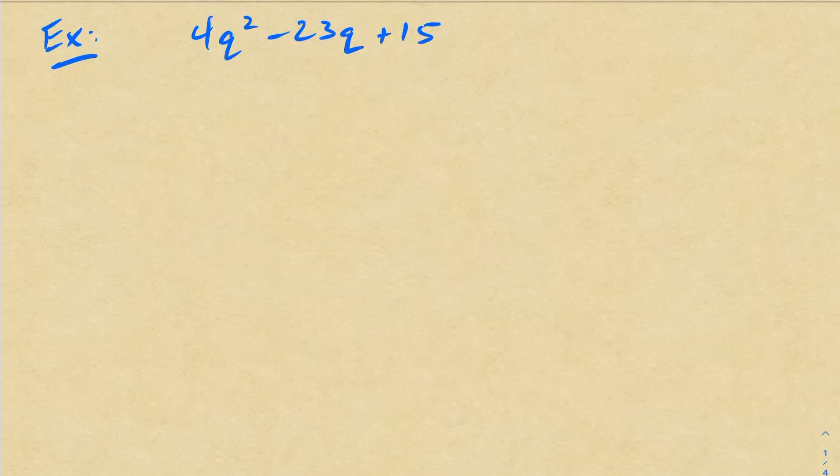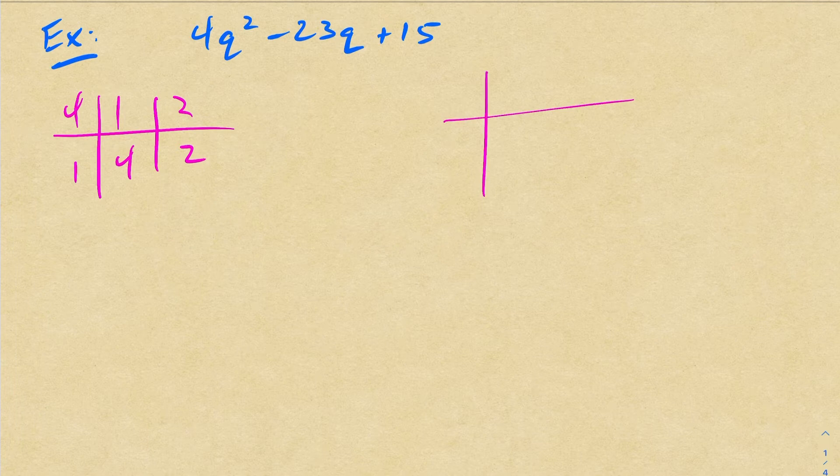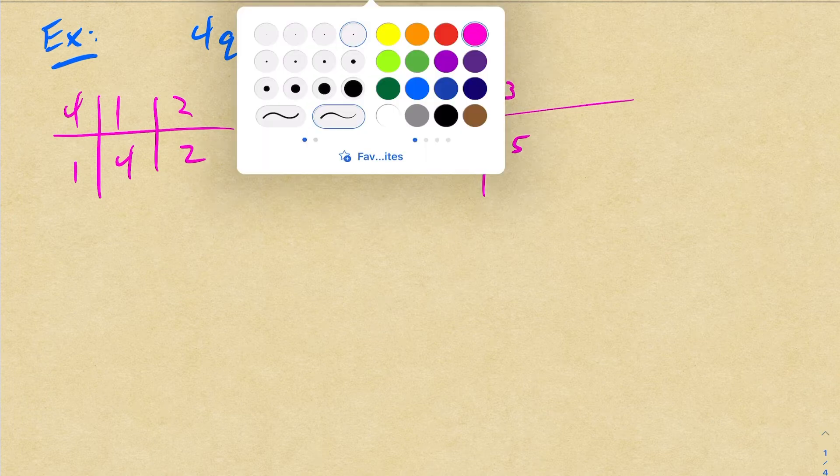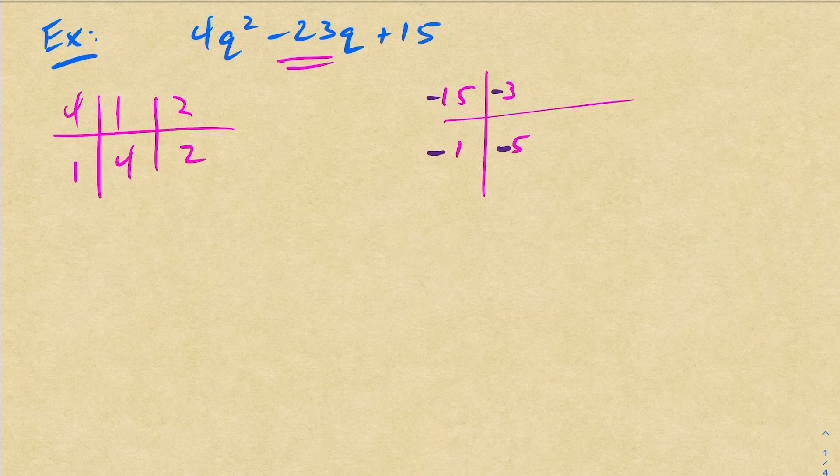All right, so same idea here. I have a complex trinomial, so I'm going to write down all the factors of 4 and their flips. So 4 and 1, 1 and 4, and 2 and 2. And likewise, all the numbers for 15. Now 15 and 1, 3 and 5. Now notice again, I have a minus sign here. So because of that minus sign, I'm going to tack on negatives here so that I can get a negative 23 out of this. So going through combinations here, if you look long enough, you're going to get these two that work here.